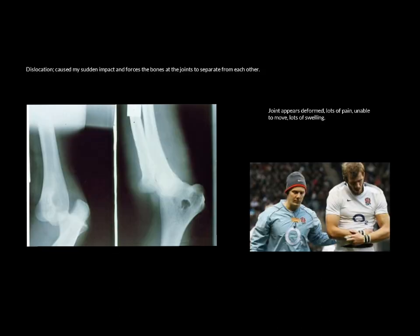All those fractures would be hard tissue acute injuries. Other hard tissue acute injuries are dislocations, caused by sudden impact forces on the bones where the bones don't break — they separate. Here you can see the elbow joint: the humerus and the radius and ulna. That part of the bone should sit in that notch, but a massive impact to the elbow has caused it to dislocate. Any kind of dislocation — particularly in the shoulder or hip — shows obvious deformity. It looks odd and different straight away.